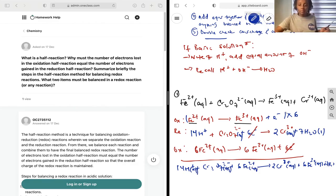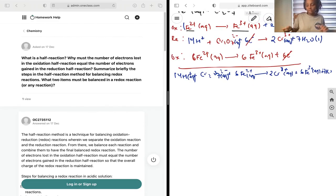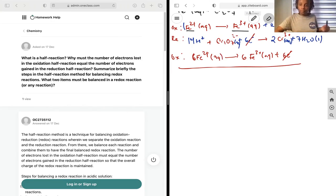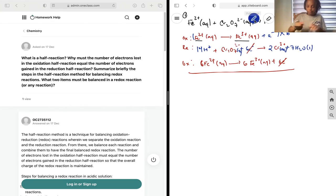We get 14H+ plus Cr2O7^2- plus 6Fe2+ to 2Cr3+ aqueous plus 6Fe3+ aqueous plus 7H2O liquid. This is going to be our balanced equation. Let me rewrite that so it's a bit clearer.